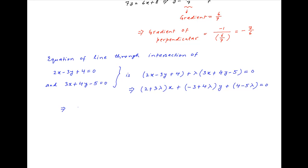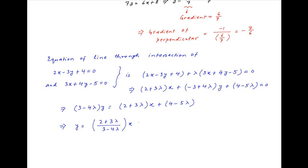This can be rearranged as (3 minus 4lambda)y is equal to (2 plus 3lambda)x plus (4 minus 5lambda). Dividing both sides by (3 minus 4lambda), we get y is equal to (2 plus 3lambda)/(3 minus 4lambda) times x plus (4 minus 5lambda)/(3 minus 4lambda). The gradient of this line is equal to the coefficient of x, which is equal to (2 plus 3lambda) divided by (3 minus 4lambda).